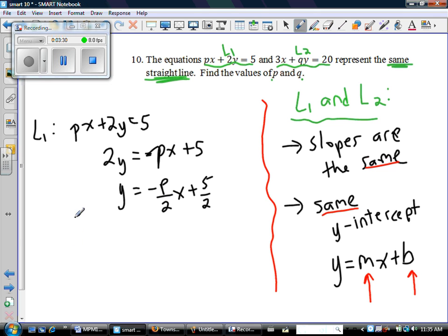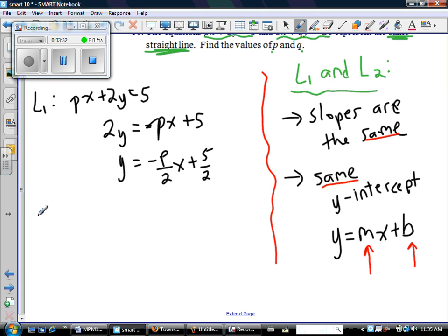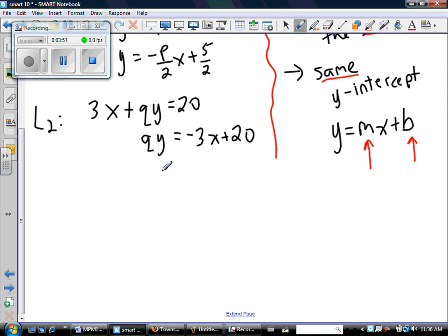Now we need to do the same thing for line two. So line two looks like this. 3x + qy = 20. And again, I need to isolate the y term. And now I need to divide by q. And I know that probably seems weird. But remember, q is just a number. So I'm just going to divide by q.